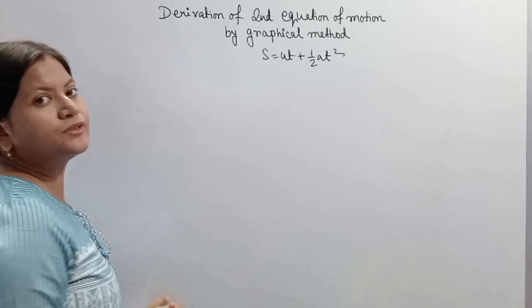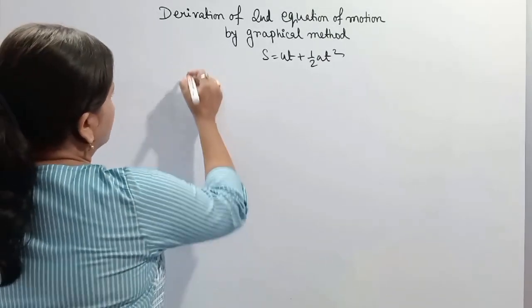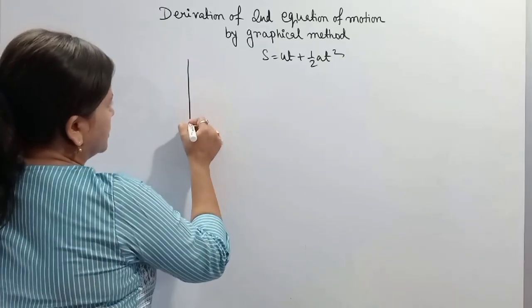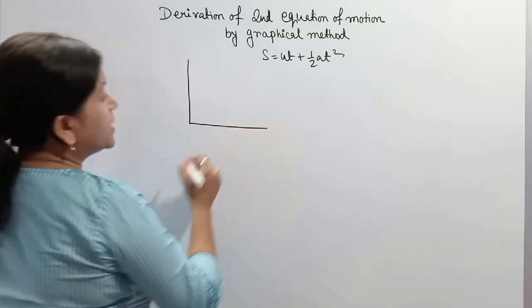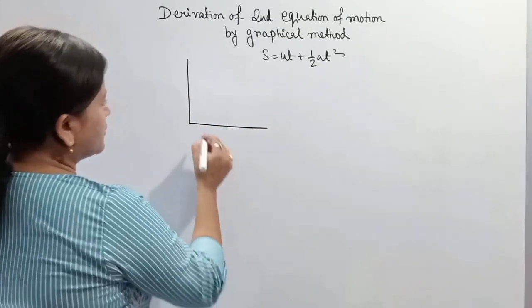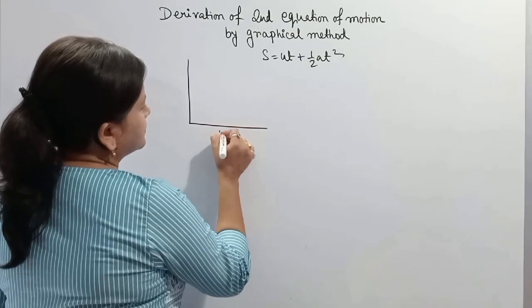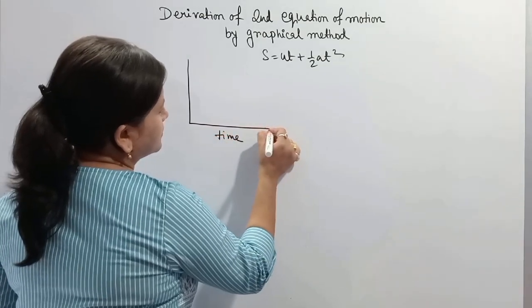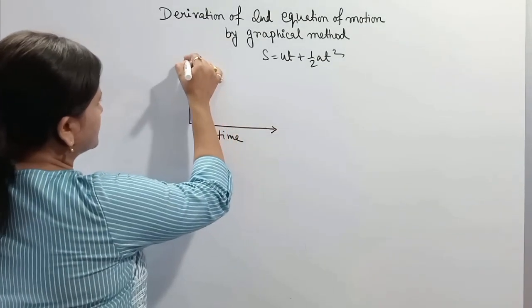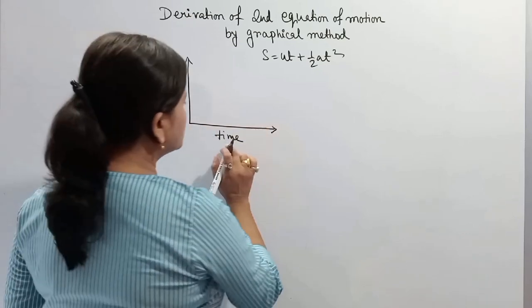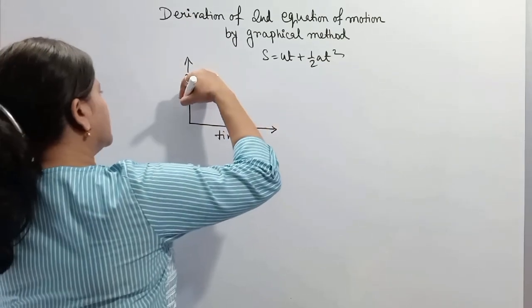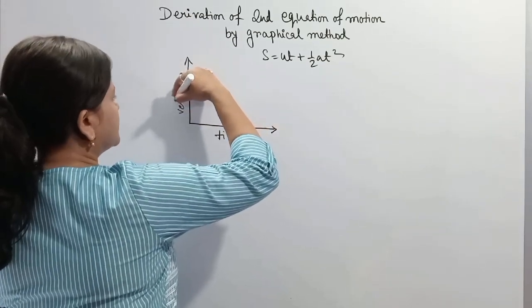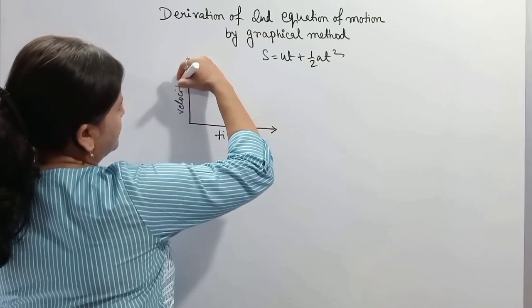So first we will draw the graph. Here we use velocity-time graph. This x-axis denotes time and y-axis represents velocity.